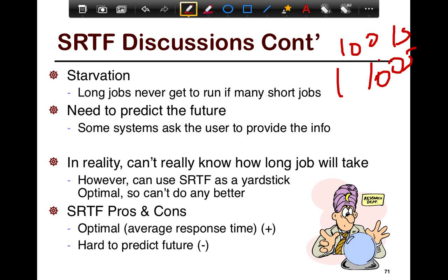In reality, though, it's really hard to know how long a job will take, which is the bigger problem. And normally what happens is you use shortest remaining time first as a yardstick, in the sense that it's an algorithm to compare. Let's say that you did know what the length of a job was. How well does the algorithm that you built compare to the optimal one, which in this case is the shortest remaining time first. Overall pros and cons, it is optimal, and cons is really that it's hard to predict the future.